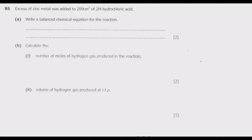Excess of zinc metal was added to 200 cm³ of 2 molar hydrochloric acid. Remember 2M is the number of moles per decimeter cubic, which we call molarity.